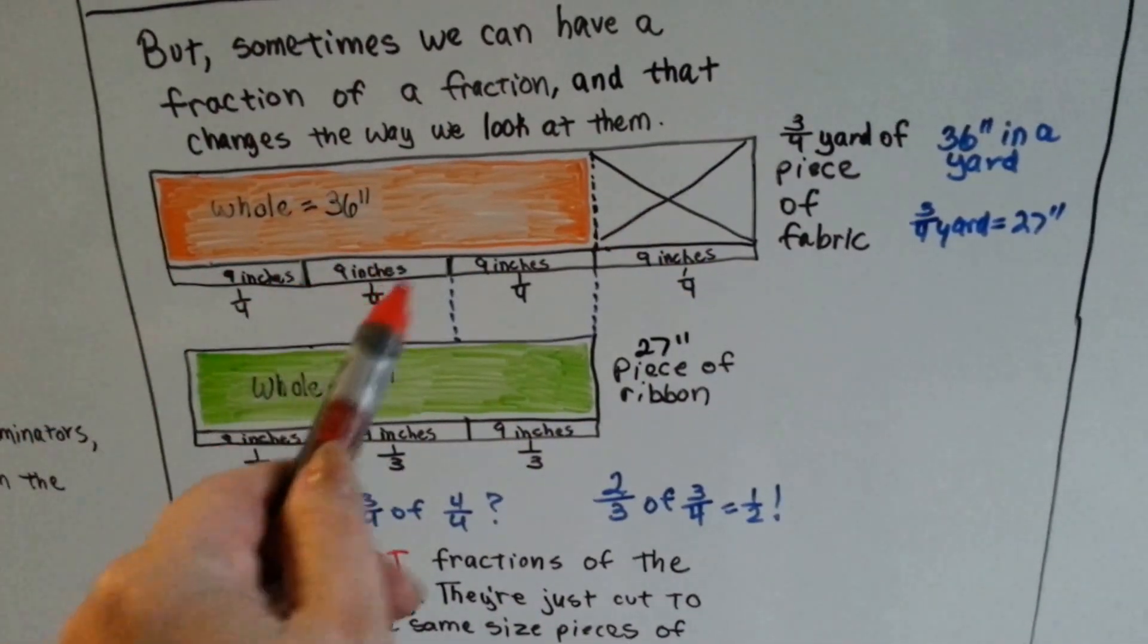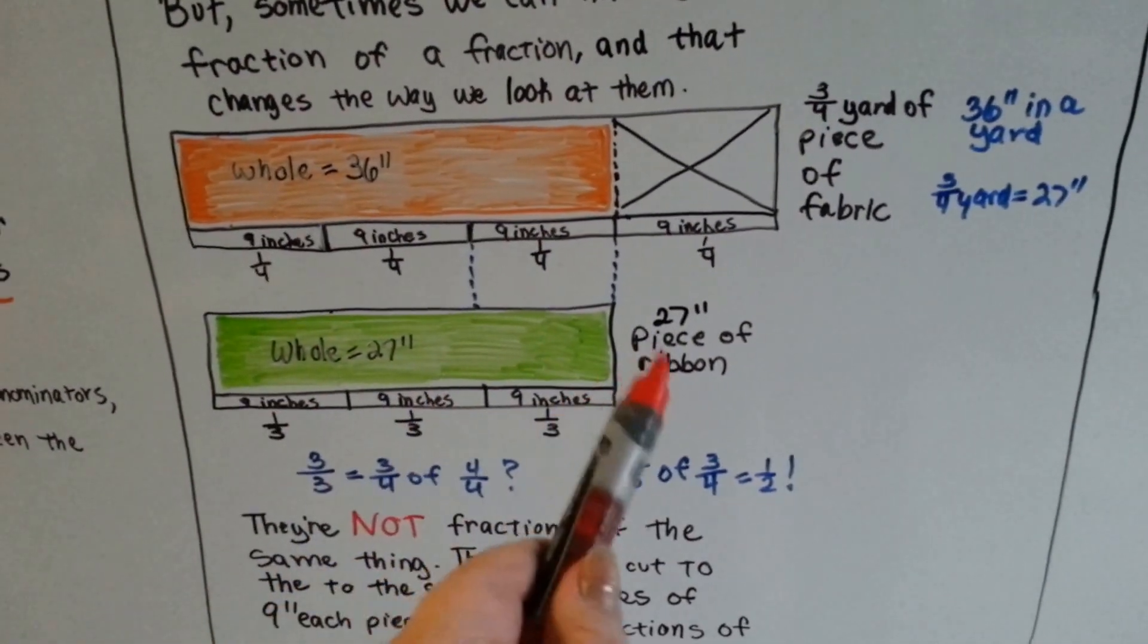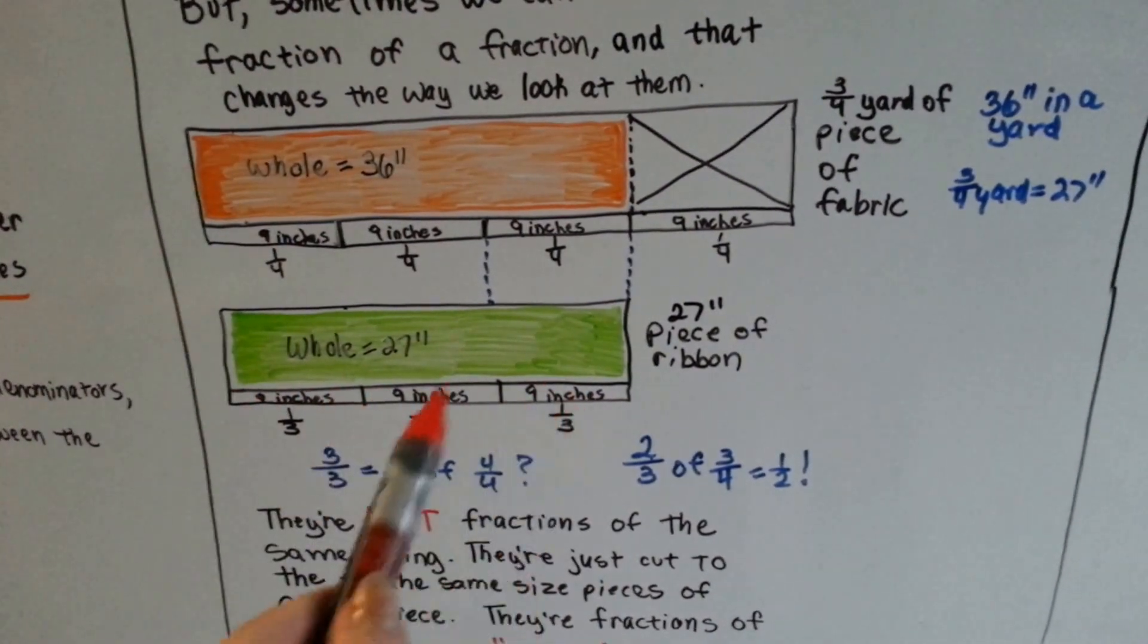And looking at the fabric that's split into parts of four because we bought three-fourths yard, each fourth is nine inches. On the ribbon, it's split into thirds, and because it's a 27-inch piece of ribbon, each third is split into nine inches.